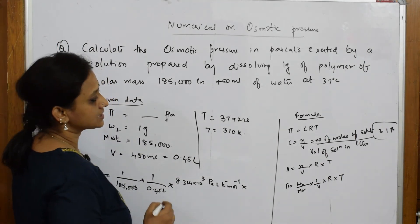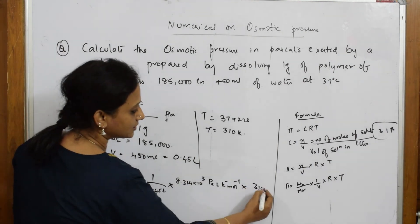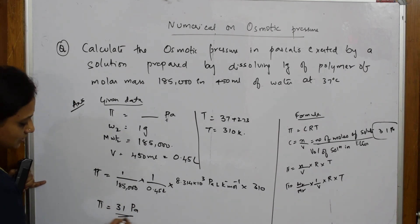Now, temperature is also ready. You multiply the temperature here. So when I solve this whole thing, I get an answer of 31 pascals. This is your answer. Because they want me to write in pascals. So I have written 31 pascals here. So I have solved the whole thing.